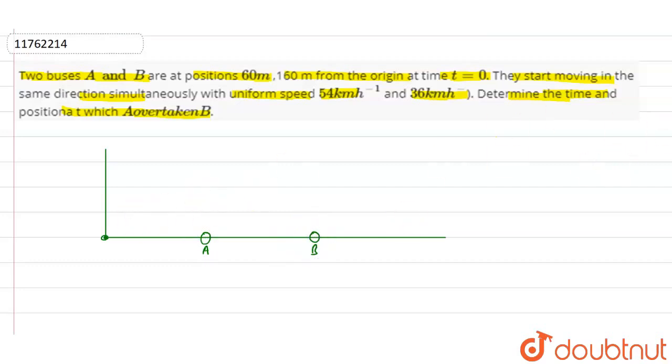If I have a distance, I will talk about X. This is X initially. It is 60 meters from the origin. B is at 160 meters from the origin.